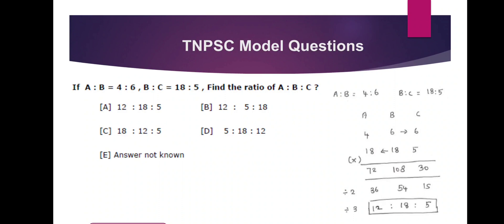Now we will multiply. For the A-B-C ratio: 18 × 4 = 72, 18 × 6 = 108, 5 × 6 = 30. Now we simplify — divide by 2, then by 3, then by 6. So A:B:C = 12 is to 18 is to 5. Simple answer.